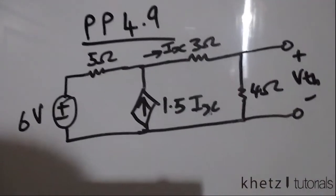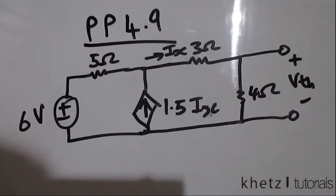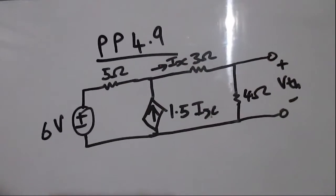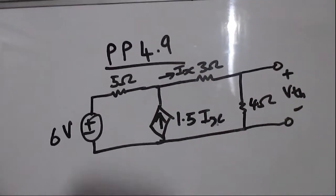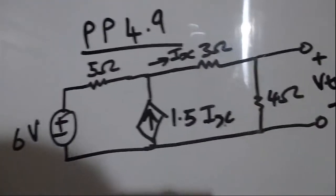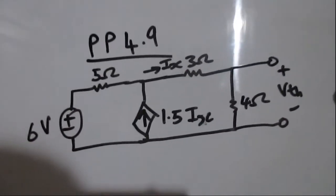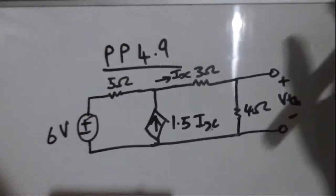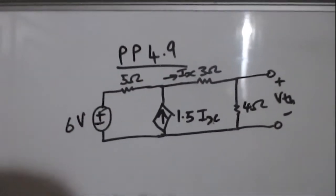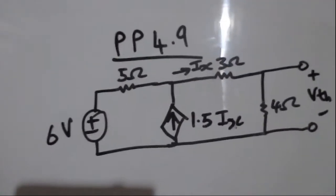Welcome to Cat's Tutorials. In this video I'll be covering practice problem 4.9. Given this circuit, we are asked to find the Thévenin equivalent to the left of the terminals of this particular circuit.